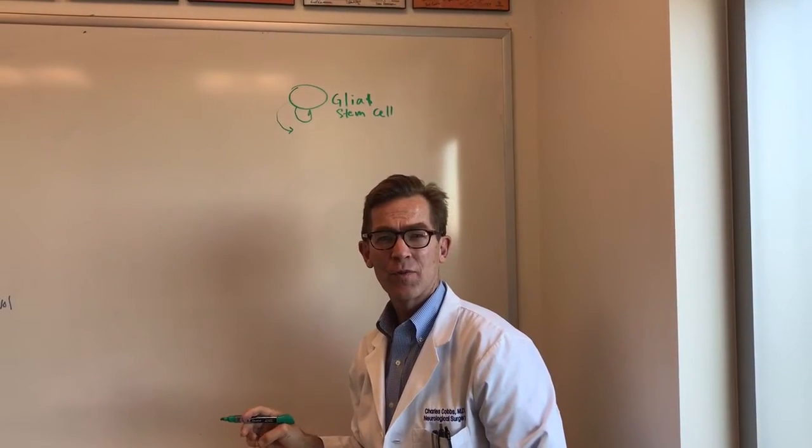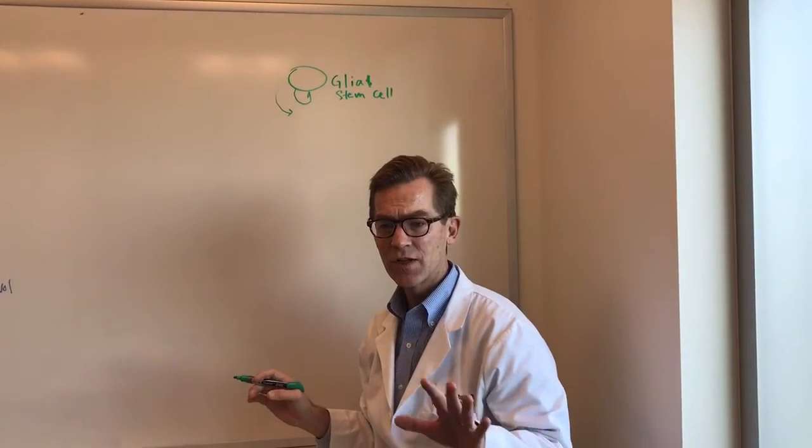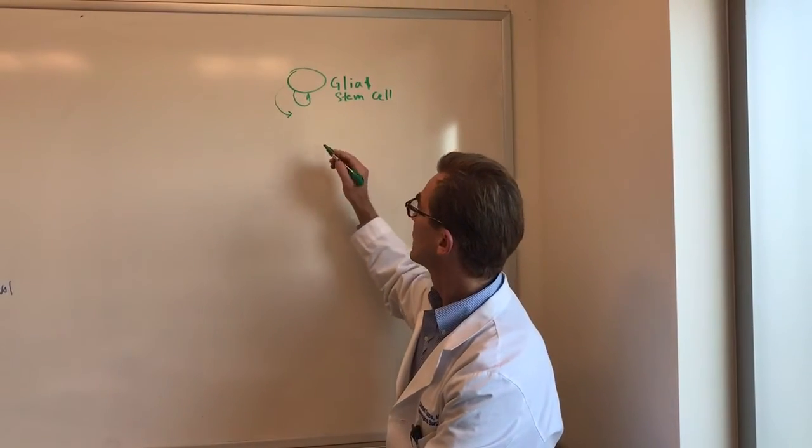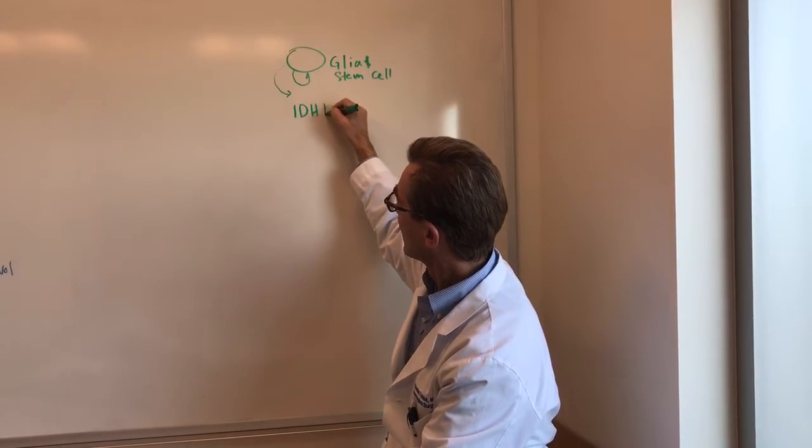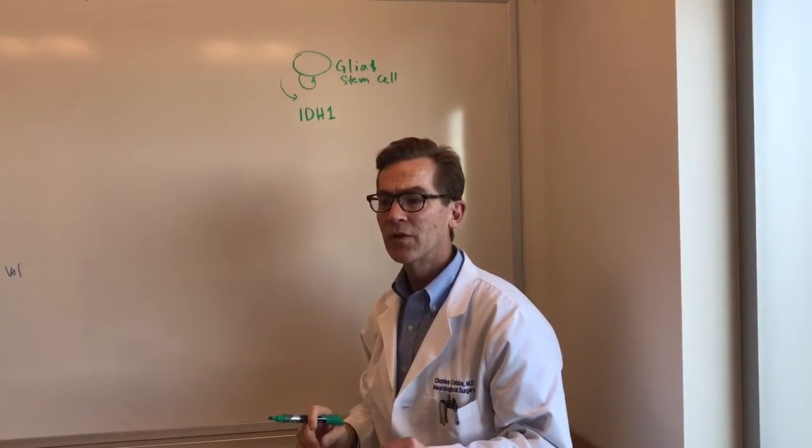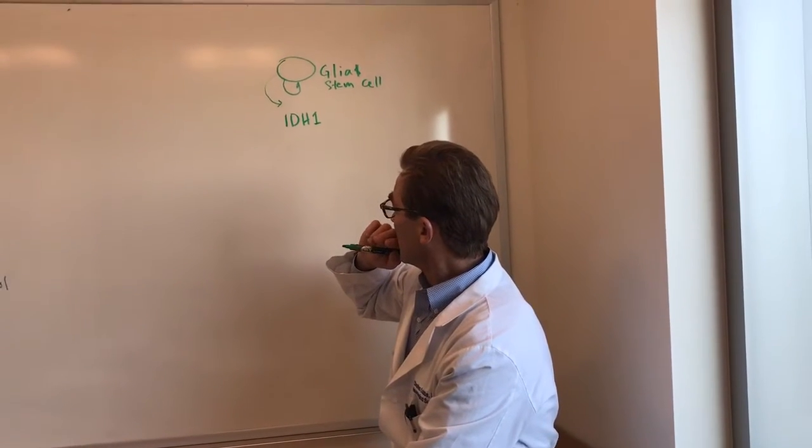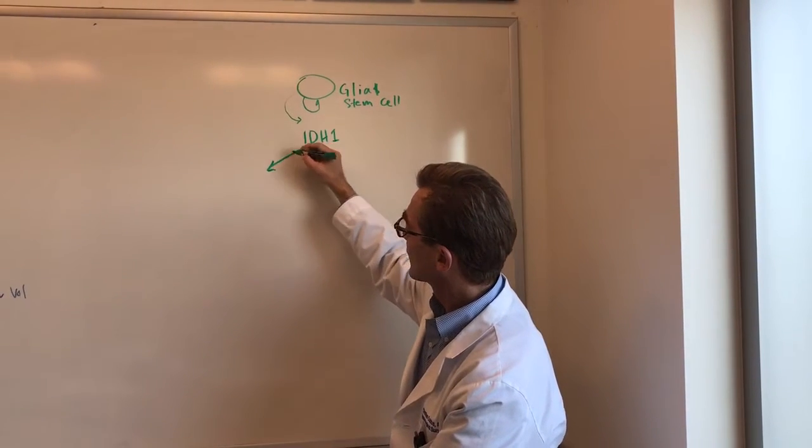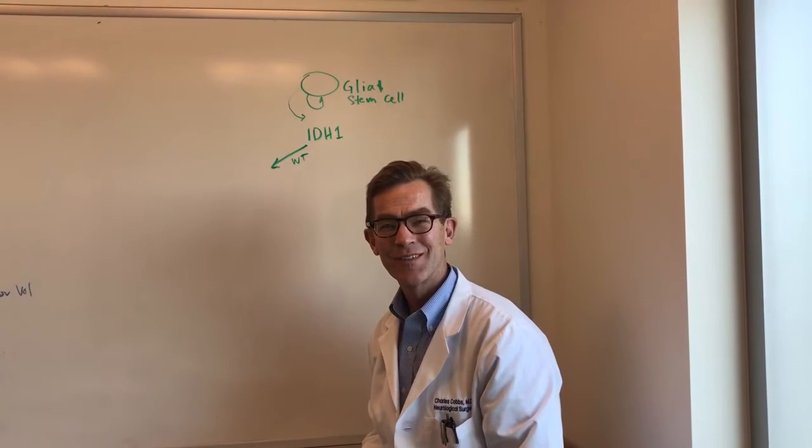About five years ago, a group at Duke University discovered that there's a genetic mutation that kind of divides glial tumors into two categories, and that's called IDH1 and IDH2, but primarily IDH1, and this encodes for an enzyme that is involved in metabolism of cells. Most glioblastomas that we see in patients have what's called wild type, or WT, which means it's the normal IDH1 gene.